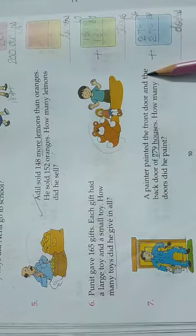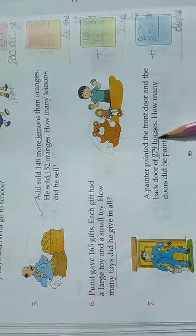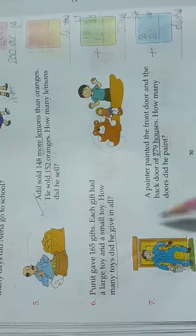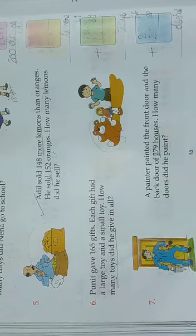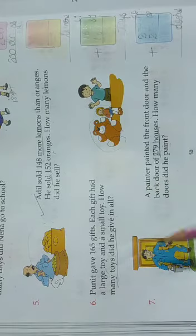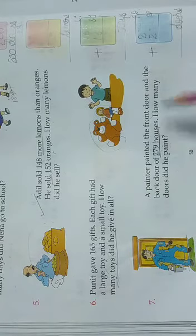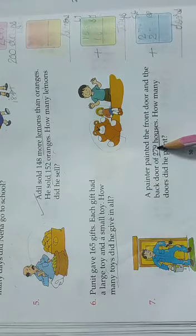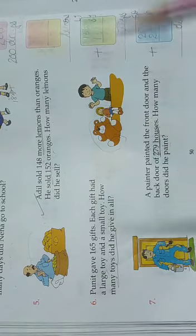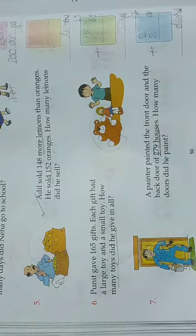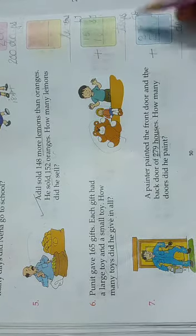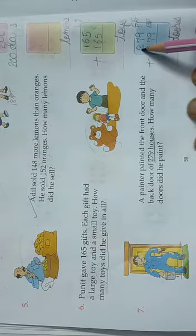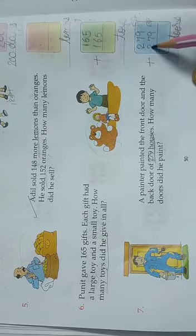Last one. A painter painted the front door and the back door of 279 houses. Here we can see a painter. Diwali is coming, so everyone got their doors painted at their house. So each house had a front door and back door painted. How many doors did he paint? Only 279? No. There are 279 houses. And every house has one front door and one back door. So front doors are 279, back doors are 279.